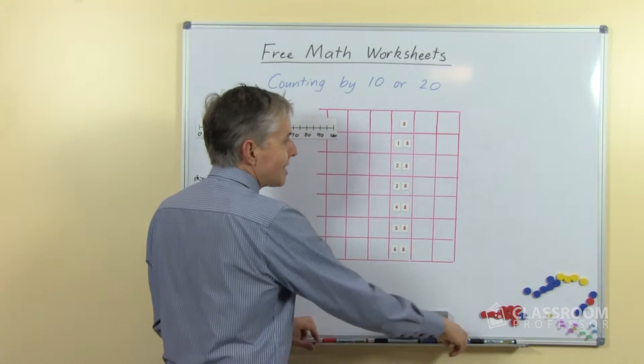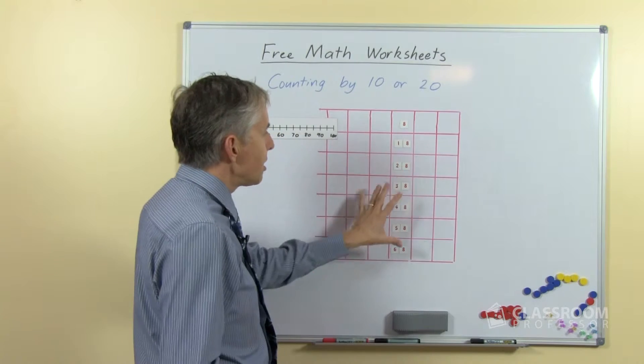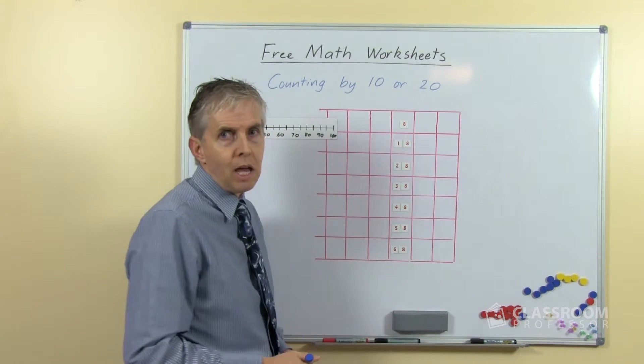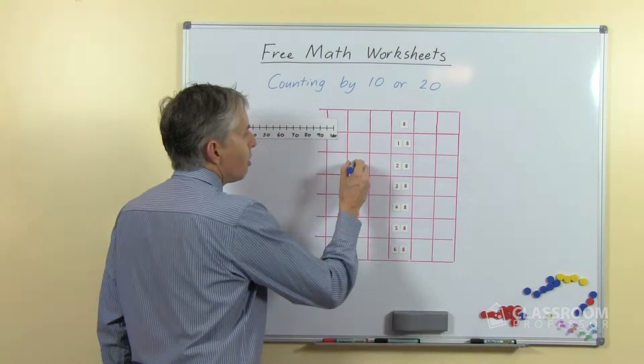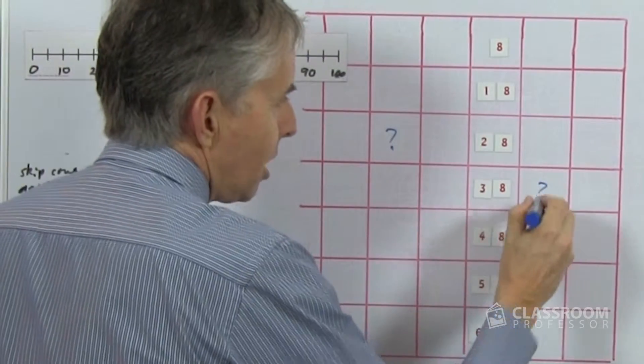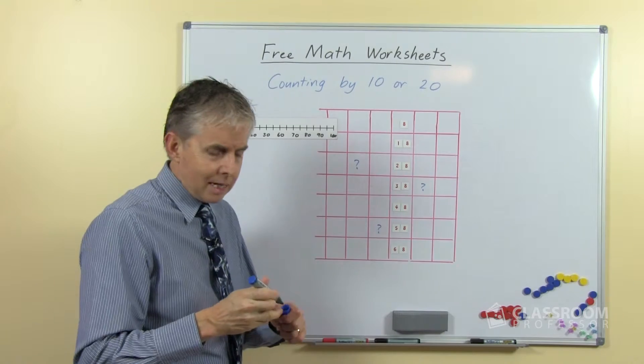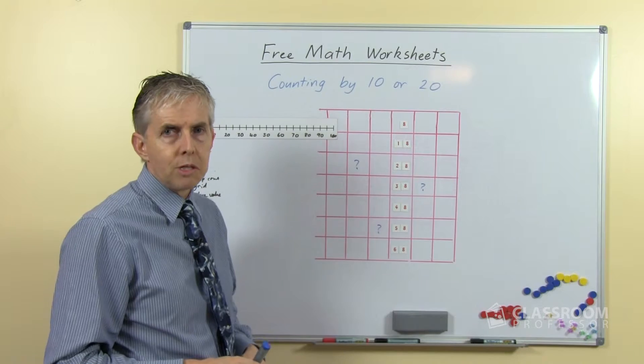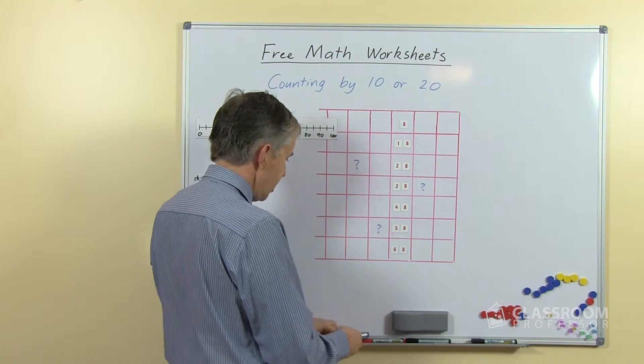To further extend this we could ask the students about the numbers that are around this pattern. So if these are all the numbers that we have, we could say what number is here, what number is there, what number is there, and so on, and ask the students to think about the numbers in relation to each other on the 100 grid.